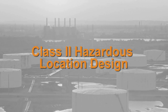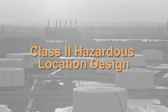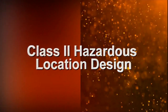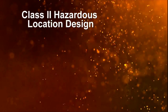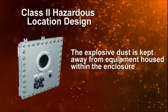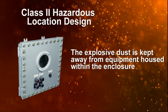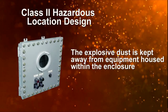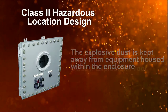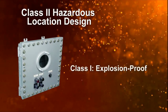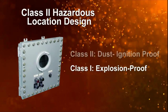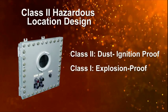In the case of Class II, the assumptions are different, and in turn the design is different. In Class II, the explosive dust is kept away from equipment housed within the enclosure so that no internal explosion can take place, and there is no longer a need for heavy explosion-containing construction or flame paths. This difference explains why Class I Division 1 equipment can be called explosion-proof, and Class II equipment is called dust ignition-proof.